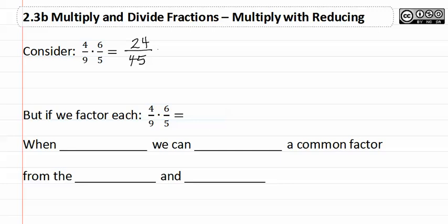I then must see if this reduces. Since both of these numbers are divisible by three and they give me eight-fifteenths, I have now added an extra step in the problem to get to eight-fifteenths.